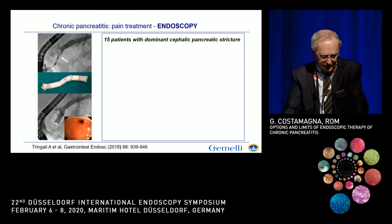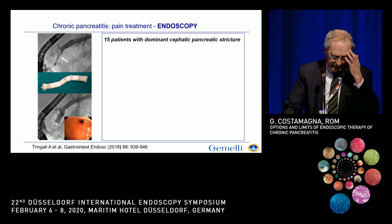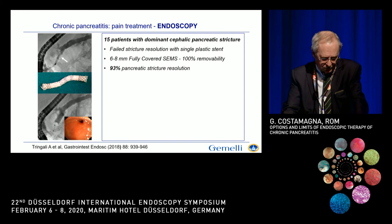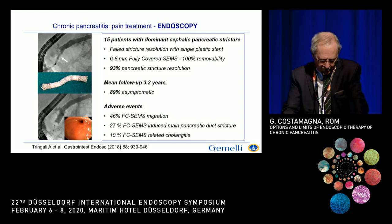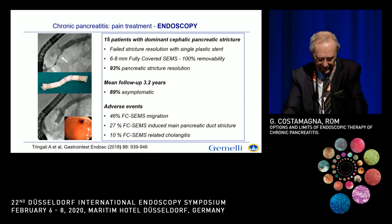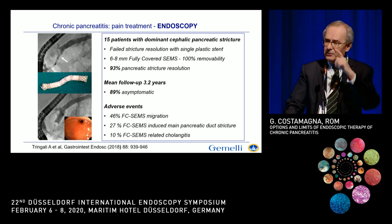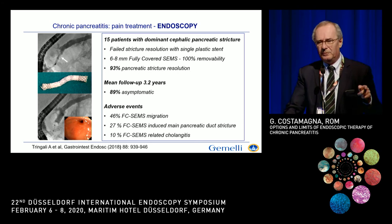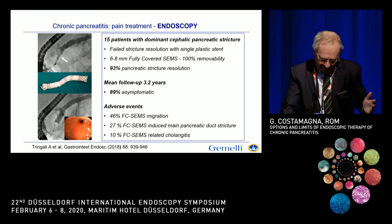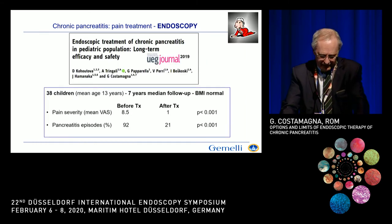Regarding metal stents, we are still far away because you need a fully covered stent that can be removed, given this is a benign pathology. We published an experience with a fully covered stent that was quite effective but also dangerous — one-fourth of the patients developed another stricture. So the stent solved the original stricture but induced another one that had to be treated with plastic stents. Other studies are ongoing on this kind of stent.